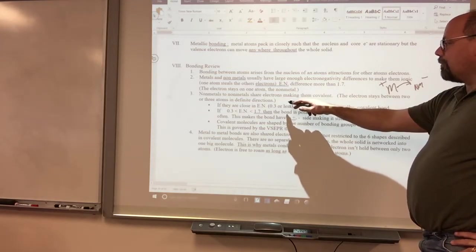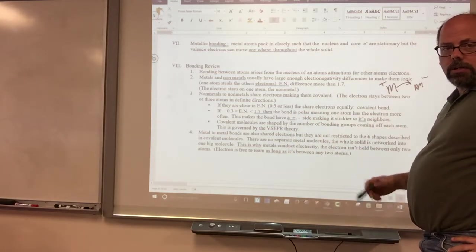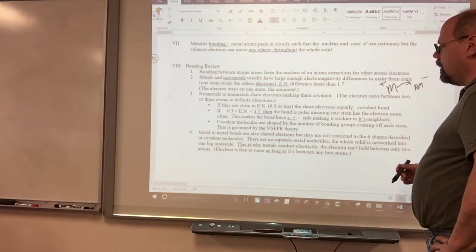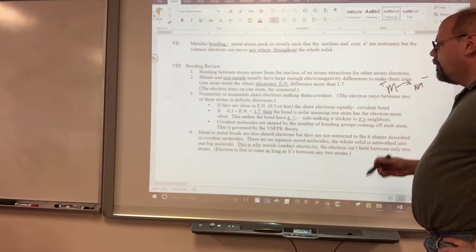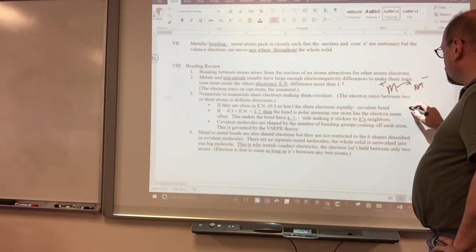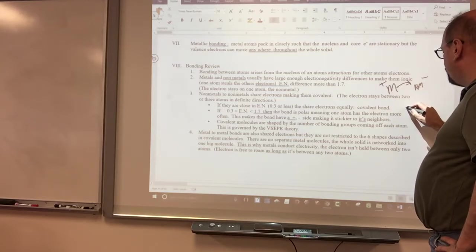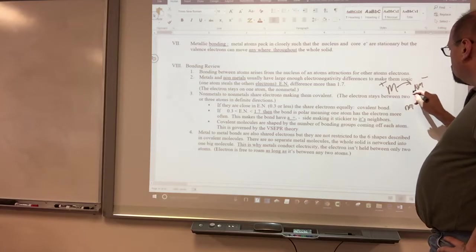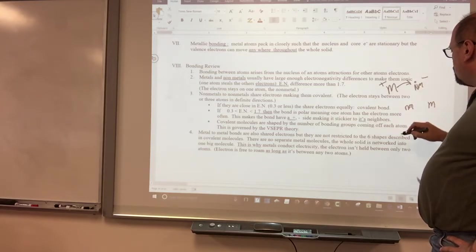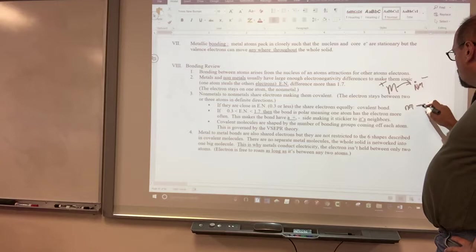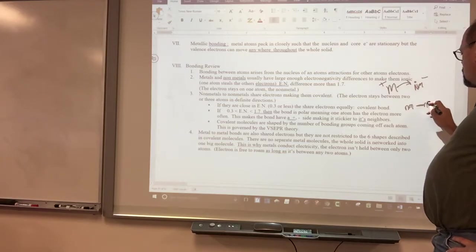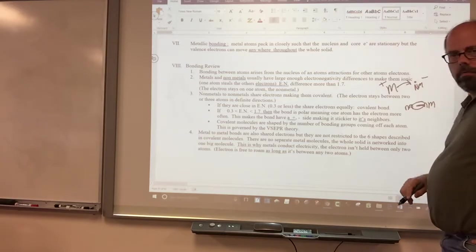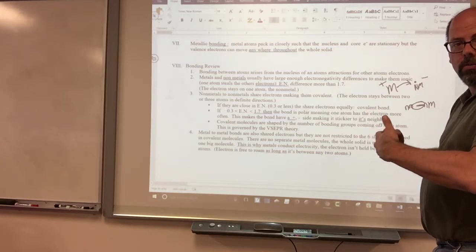Now, when non-metals and non-metals get together, they usually share electrons because they're similar in electronegativity. But the two non-metals, let's just call them NM. So where does the electron up here stay? It stays extra on this atom. But in here, the non-metal, non-metal stays between the two. So the electron is shared between the two.